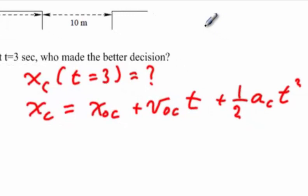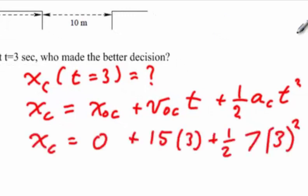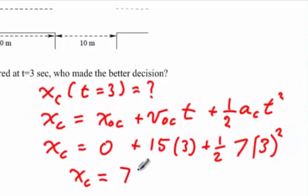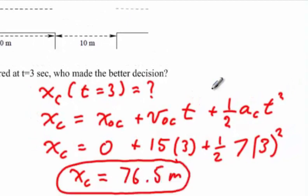Plugging these into the expression, we find this expression for x of the car at t equals 3 seconds. Finishing the algebra, we find that the position of the car at t equals 3 seconds is 76.5 meters, meaning that the decision to hit the gas was a good one because the car was well clear of the intersection prior to the light changing.